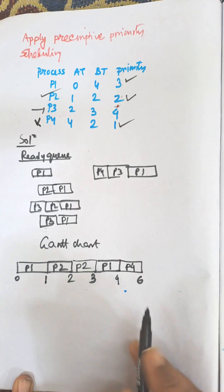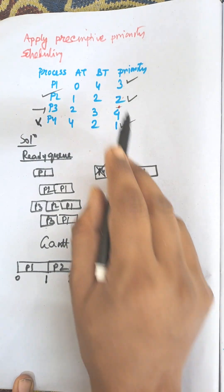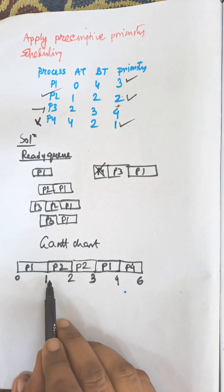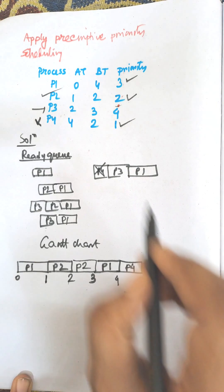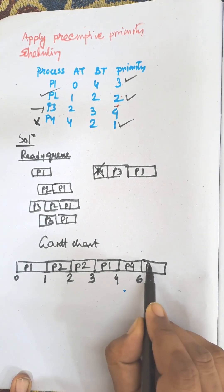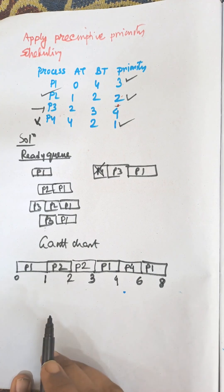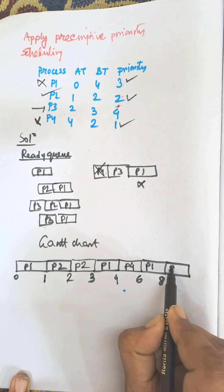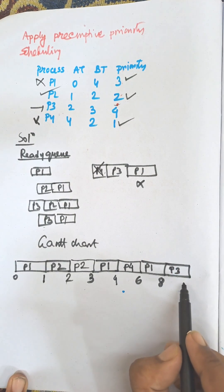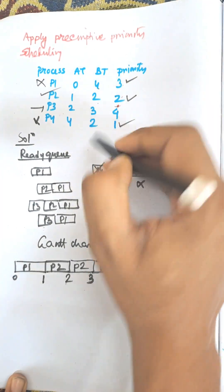P4 finishes. Now among the remaining P1 and P3, the priority of P1 is better and P1 has remaining burst time. P1 will finish its remaining time up to time 8. After P1 finishes, P3 will finish its execution. The timeline values are: 3, 4, 6, 8, and 11.